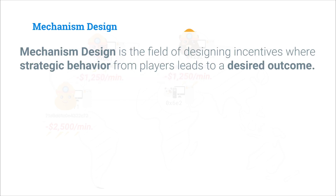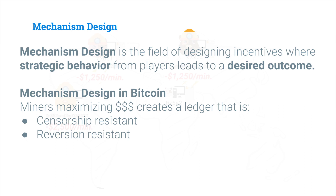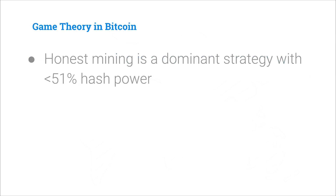The last concept I want to introduce is mechanism design. Mechanism design, sometimes called reverse game theory, is working back from a desired outcome to creating the game so that players have the incentives to reach that outcome. For example, our desired outcome could be to create a history that is censorship resistant and reversion resistant, and then we construct our protocol so that block proposers and miners trying to maximize money creates this censorship and reversion resistant ledger. There's so much literature around game theory and mechanism design that can really help us when analyzing and designing blockchain protocols.